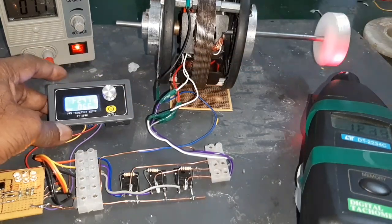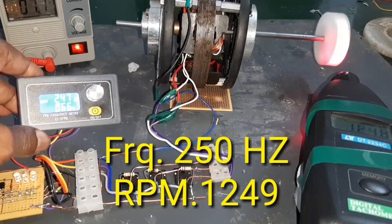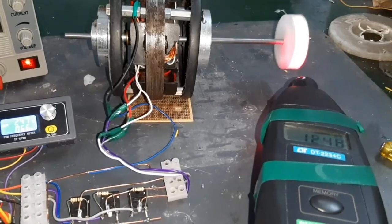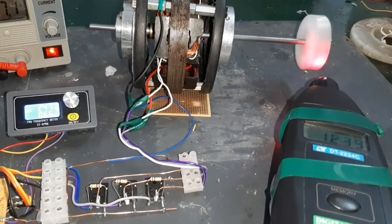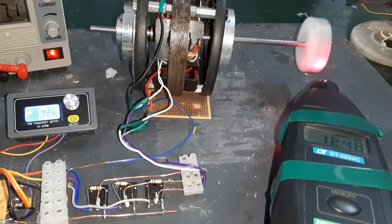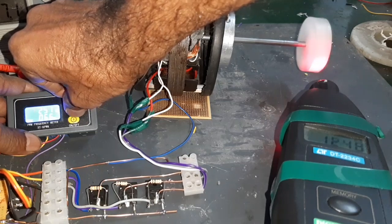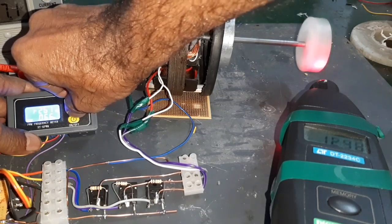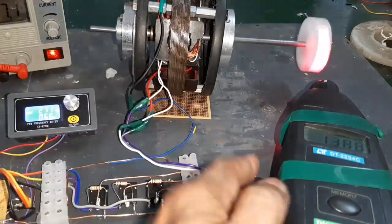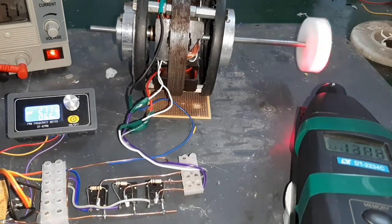Here the frequency is 240, 247. Here the motor RPM: 1239. Voltage 7 volts, current 1.2 amps. Now I am going to increase the speed. RPM 1388.